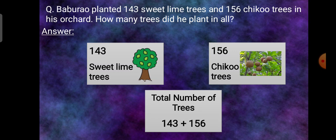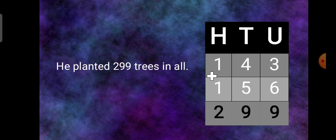We are going to write statement. First, number of sweet lime trees 143. Number of chiku trees 156. Total number of trees 143 plus 156. Then we are going to do the working. That is hundreds, tens, units. We will make a column: 143 plus 156 is 299. He planted 299 trees in all.